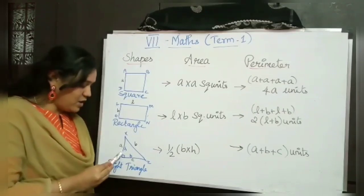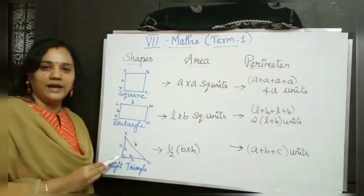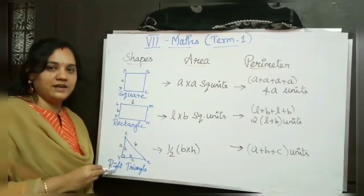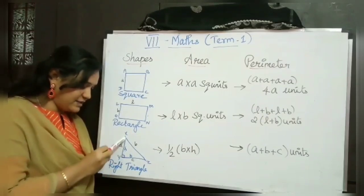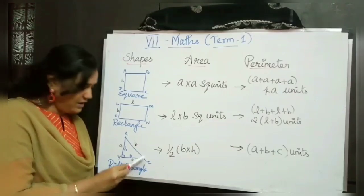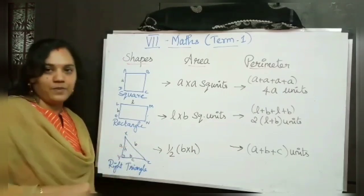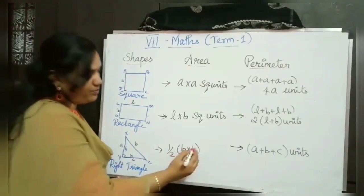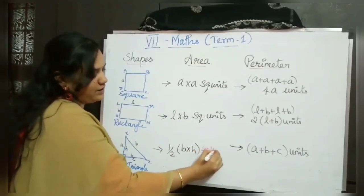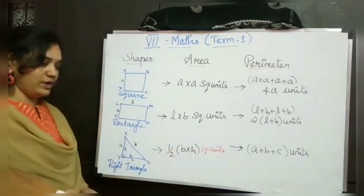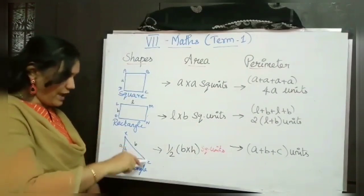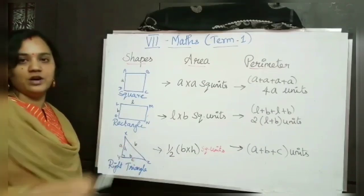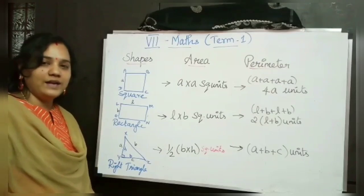The third shape is a right triangle — if any one angle equals 90 degrees, that triangle is known as a right angle triangle. In this right angle triangle, the height and base are given, and sides are A, B, and C. The formula for finding out the area of a right triangle is half into base into height square units. Perimeter is A plus B plus C. I think you all have already learned this — just recalling these formulas.